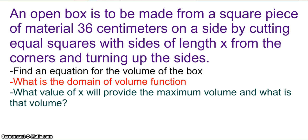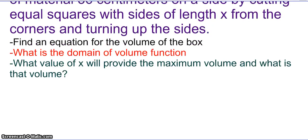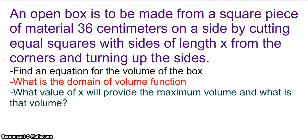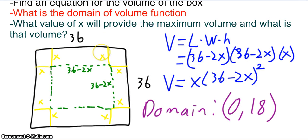Last example: an open box is to be made from a square piece of material 36 centimeters on a side by cutting equal squares of side length x from the corners and turning up the sides. Find an equation for the volume of the box. When you cut out an x by x square from each corner and fold up the sides, the bottom of the box is 36 minus 2x by 36 minus 2x. So the volume — length times width times height — is 36 minus 2x times 36 minus 2x times x, or rewritten as x times the quantity 36 minus 2x squared.